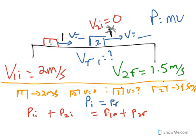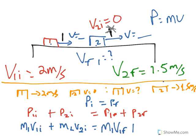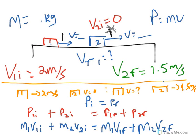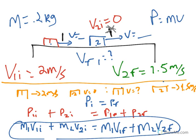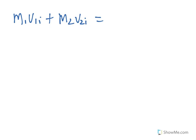So momentum of object 1 initially is the mass of the first one times its initial velocity, plus the mass of the second one times its initial velocity. That equals the mass of the first one times its final velocity, plus the mass of the second one times its final velocity. The masses of these gliders were 0.2 kilograms. Now I'm ready to plug in. Writing it out: M1V1I + M2V2I = M1V1F + M2V2F.